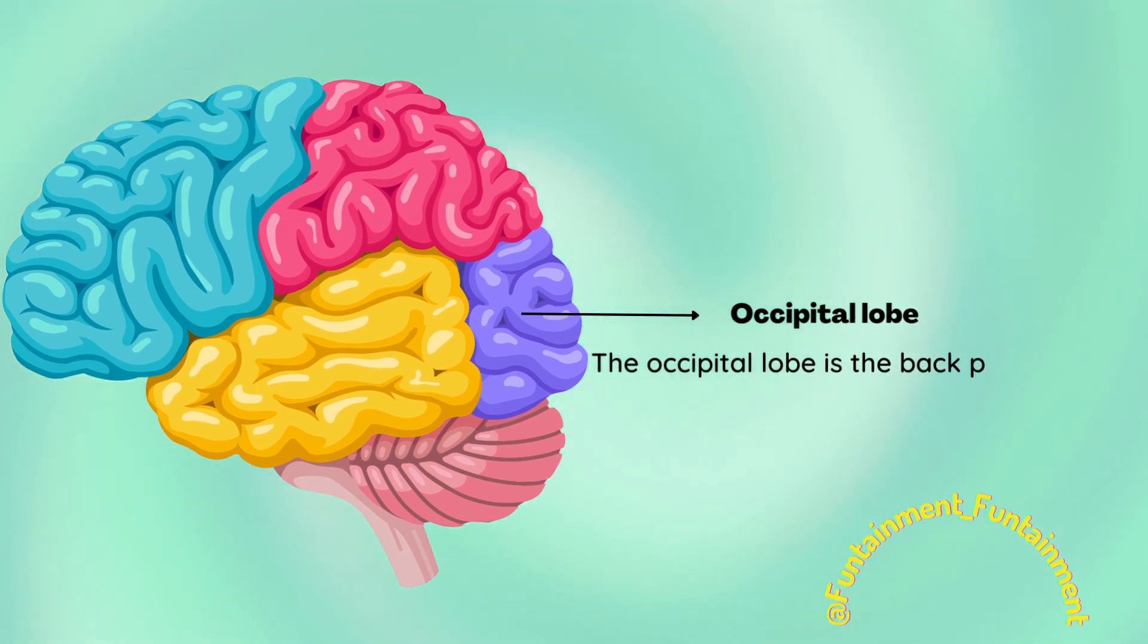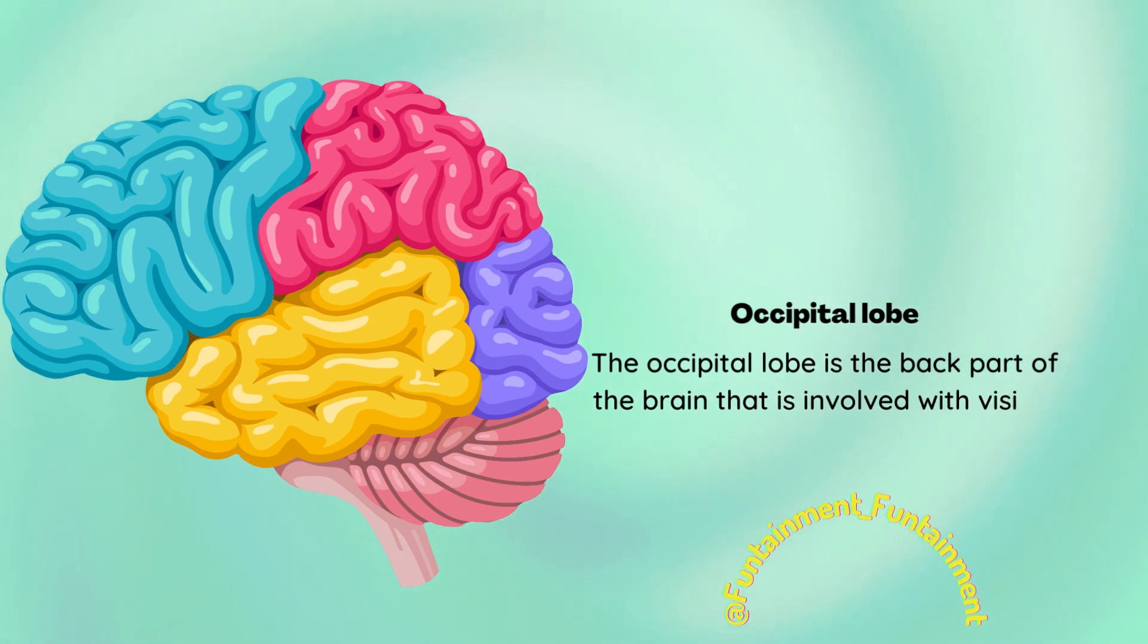Occipital lobe. The occipital lobe is the back part of the brain that is involved with vision.